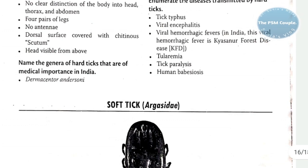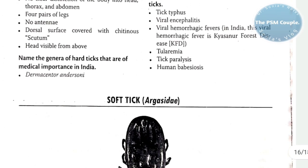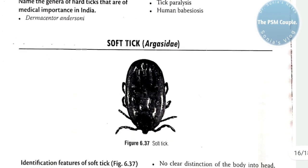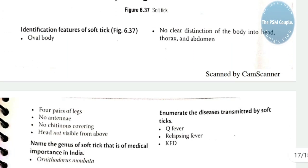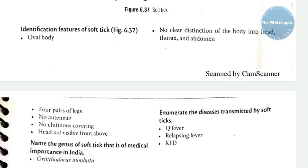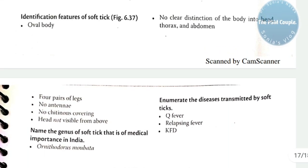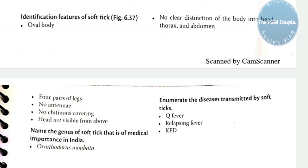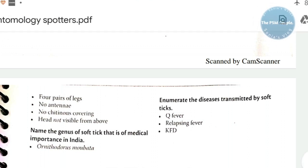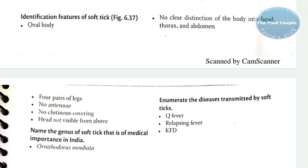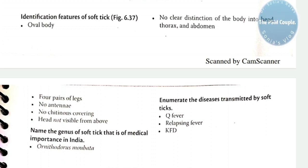Comparing hard and soft ticks: the hard tick transmits viral encephalitis, viral hemorrhagic fever, tularemia, and tick paralysis; the soft tick transmits Q fever and relapsing fever. The distinguishing features of ticks are: body not divided into head, thorax, and abdomen; four pairs of legs; no antennae. Hard ticks have a chitinous scutum; soft ticks do not.